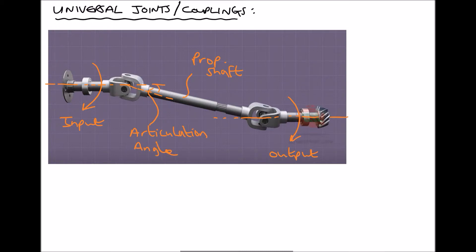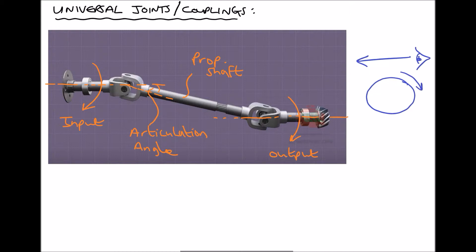There are a number of things to consider. First of all, when our input shaft rotates with constant velocity, does our prop shaft also rotate with constant velocity? The simple answer is that the prop shaft isn't going to rotate with constant velocity. What's a little more difficult is to understand the reasons why. Imagine you're looking at this drive shaft end on — the input shaft would be represented by a circle rotating with constant angular velocity. Therefore the time taken to move from 0 degrees to 45 degrees is going to be exactly the same as the time taken to move from 45 to 90 degrees, because the angular speed is constant.